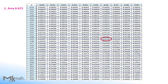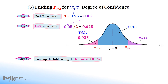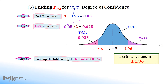We found the exact 0.025 area. Go straight to the left to read the first two digits of the z-score, and go straight up to read the second decimal place. So the z-score should be negative 1.96, which corresponds to the left cumulative area 0.025. Since we found the left z-critical value, we just change the sign to get the positive critical value. Therefore, z-critical values for the 95% confidence level are ±1.96.